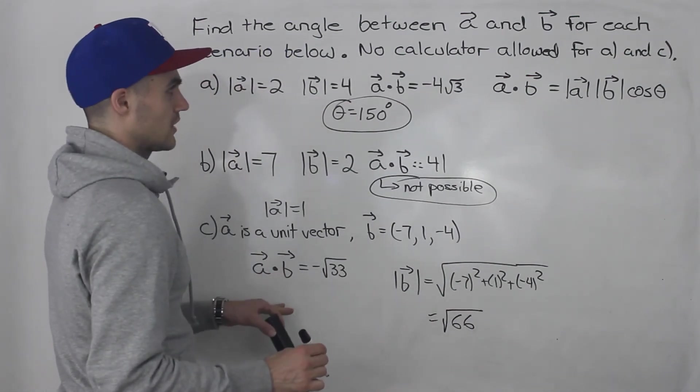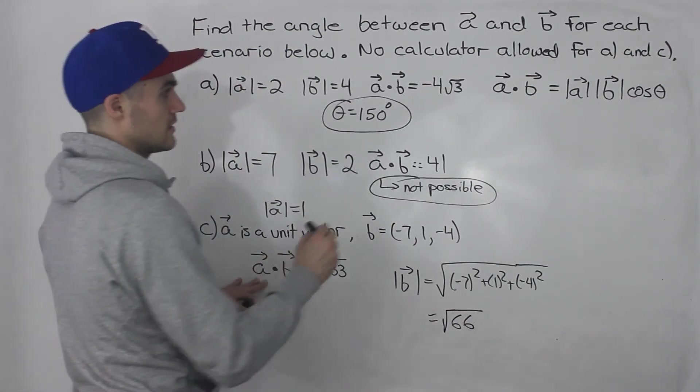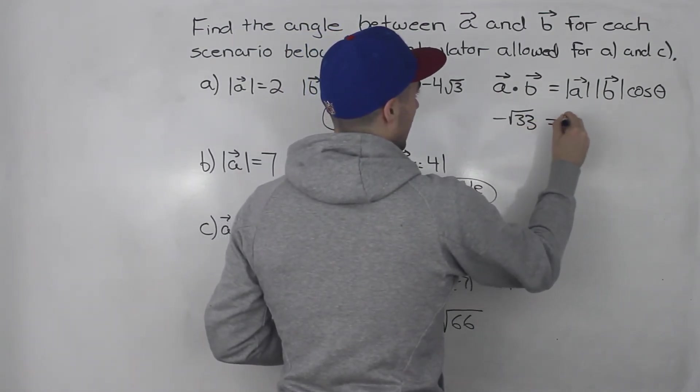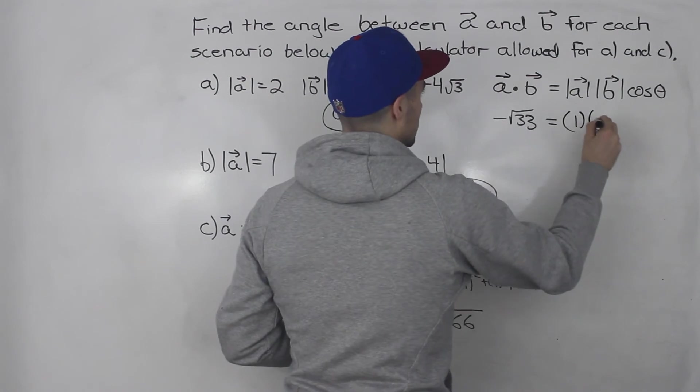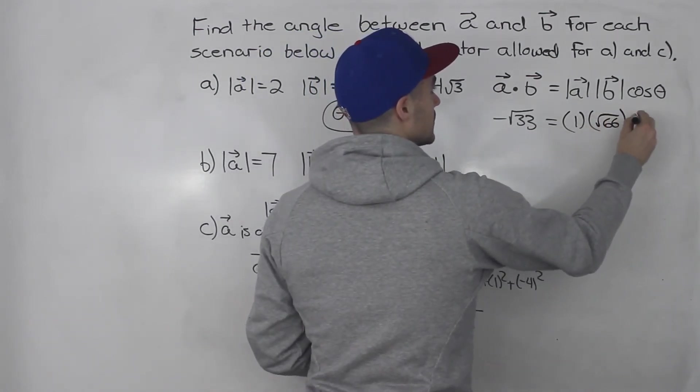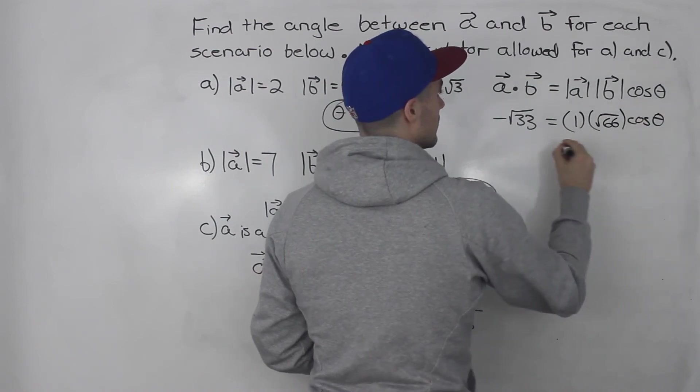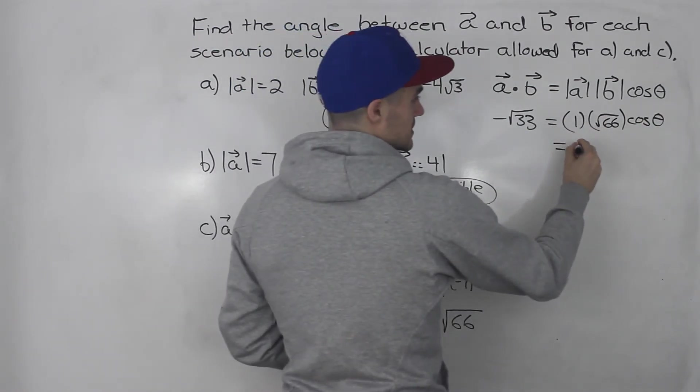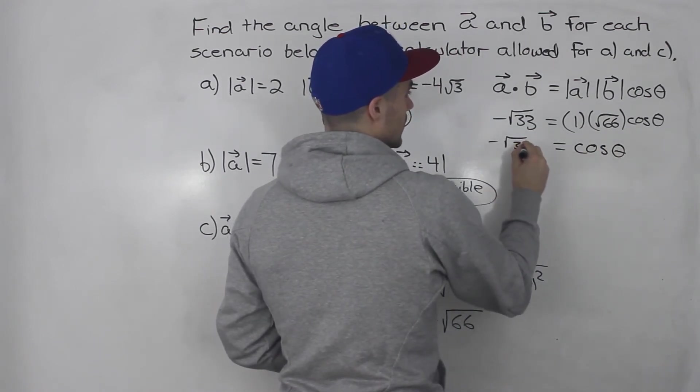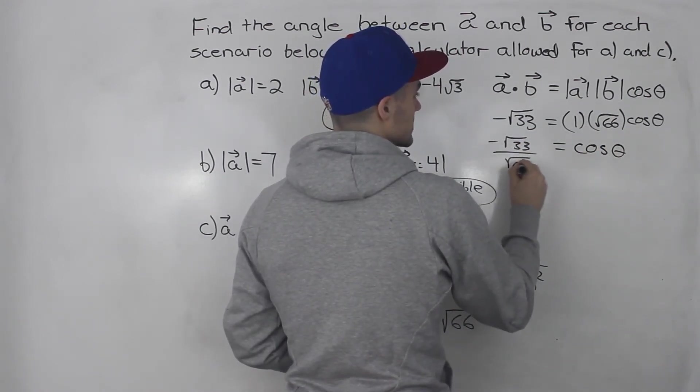So now we could plug everything into the formula. Notice that a dot b is given as negative root 33. And then the magnitude of a is 1, it's a unit vector. Magnitude of b is root 66. And we've got cos theta. So dividing both sides by root 66, cos theta is negative root 33 over root 66.